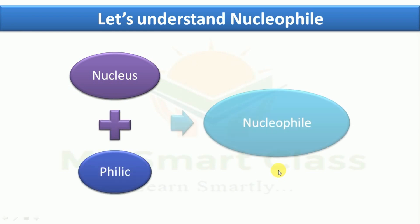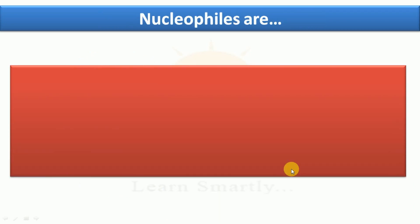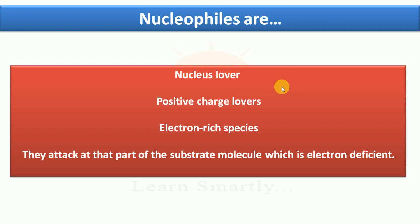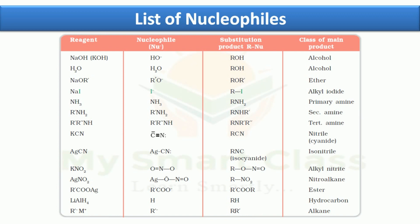The word nucleophile is made from two words: nucleus plus philic. As we know, any nucleus carries a positive charge, and 'philic' means to love. So a nucleophile is a nucleus lover — it loves positive charge. Therefore, nucleophiles carry the opposite charge; they are electron-rich species. Whenever nucleophiles react, they attack the electron-deficient part of a substrate molecule.